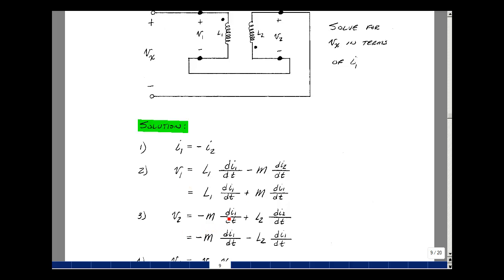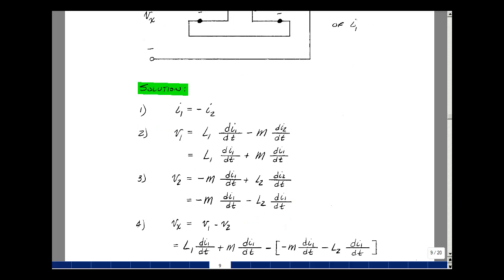V2 is equal to minus M Di1/dt plus L2 Di2/dt, but again I2 is equal to minus I1, so we'll bring that minus sign out in front. Now I want to solve for V sub x.